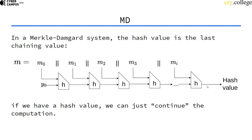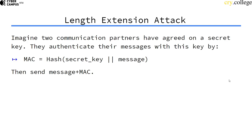The hash value is just the last chaining value coming out of the compression function. If we have such a hash value, we can actually just continue computing, because we could use this as the chaining value input of a next call to the compression function. Now imagine we construct a naive MAC.